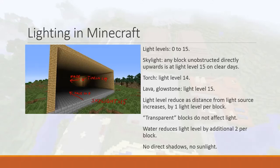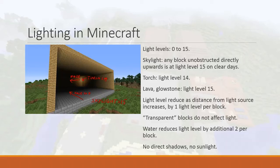Lighting in Minecraft deserves mention because it is unnatural and unusual. There are 15 light levels — the brightest lit surface is 15, fading down to 0. During the day, if unobstructed and you can see the sky above you, the ground below is lit at 15. Torches are at light level 14, and lava and glowstone are at light level 15.